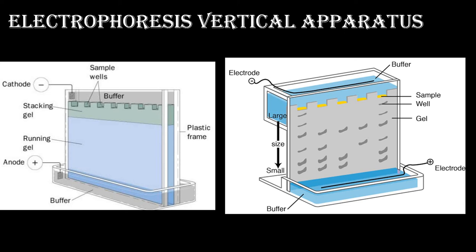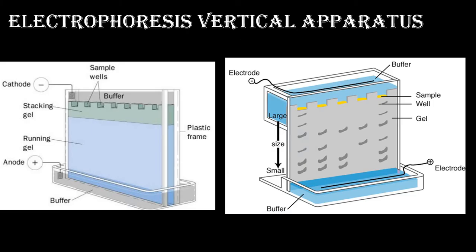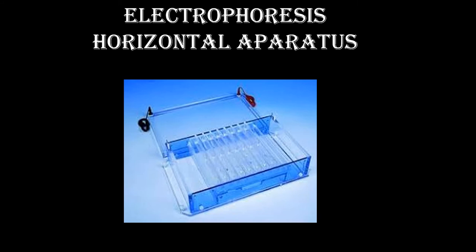A second diagram also shows the same with separated particles on the gel film. Larger sized particles remain near the surface, whereas smaller sized particles move farther from the loading point — away from the point of loading — and the buffer is collected at the base, as shown in the diagram. The horizontal electrophoresis apparatus is also shown here, with wells, anode, cathode, and the space for the buffer.